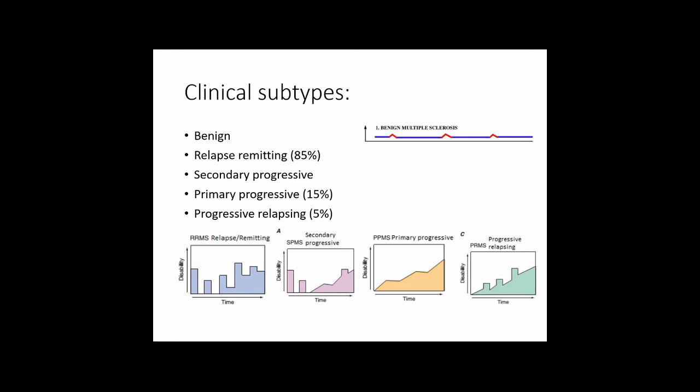Primary progressive MS means that from the onset of the first episode of CNS dysfunction, there is progressive weakness or deterioration, with possible superimposed attacks causing exacerbation of symptoms. This tends to occur in older patients around age 40 and is more equally distributed between men and women. In progressive relapsing MS, there is progressive deterioration with discrete episodes of worsening that partially improve, but without the overall disease improving.